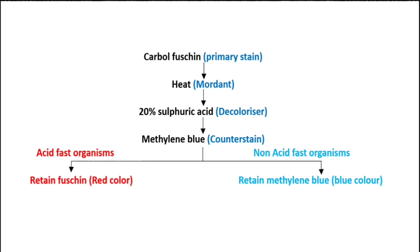Then we will add the decolorizer, which is 20% sulfuric acid. In many colleges they will give tuberculosis bacilli, which is why we use 20% sulfuric acid. After that, we will use methylene blue as a counterstain. After adding carbol fuchsin, 20% sulfuric acid, and methylene blue, every time you need to wash the slide. If an acid fast organism is seen it retains red color; if non-acid fast, it will be blue.